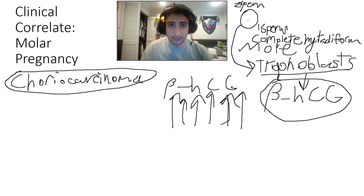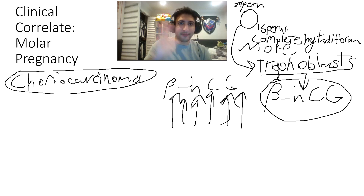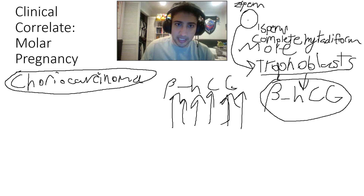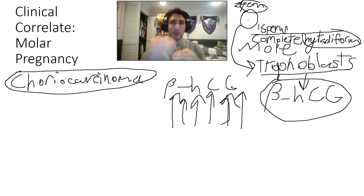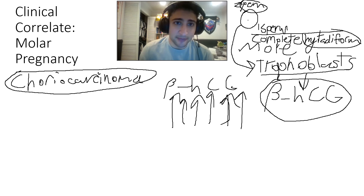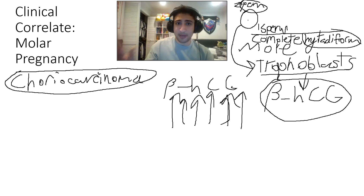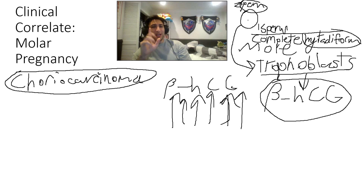On test day, examiners may give you a question stem about a woman trying to conceive whose beta-HCG is off the charts — go straight to hydatidiform mole. They may ask what is the risk in this patient, and the answer will be increased risk for choriocarcinoma. Sometimes NBME exams ask it in a layered way: they'll give you the clinical stem with elevated beta-HCG, and the answer choice will say 'increased risk for choriocarcinoma' rather than naming the mole directly.